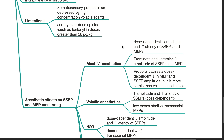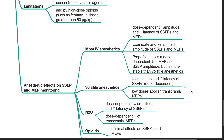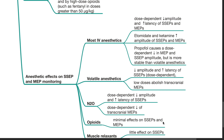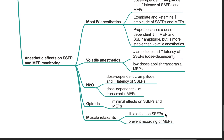Etomidate and ketamine increase the amplitude of SSEPs and MEPs. Propofol causes a dose-dependent decrease in MEP and SSEP amplitude but is more stable compared to volatile anesthetics. Volatile anesthetics decrease the amplitude and increase the latency of SSEPs; low doses of volatile anesthetics can abolish transcranial MEPs. Nitrous oxide causes a dose-dependent decrease in amplitude and increase in latency of SSEPs, and a dose-dependent decrease of transcranial MEPs. Opioids, when the dose is not excessive, have minimal effects on SSEPs and MEPs. Muscle relaxants have little effect on SSEPs but prevent the recording of MEPs.